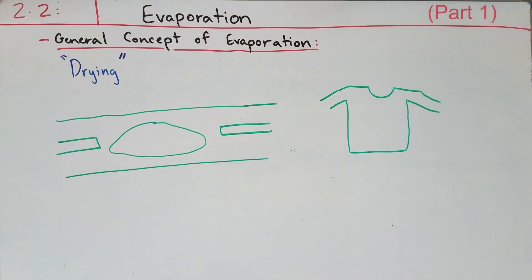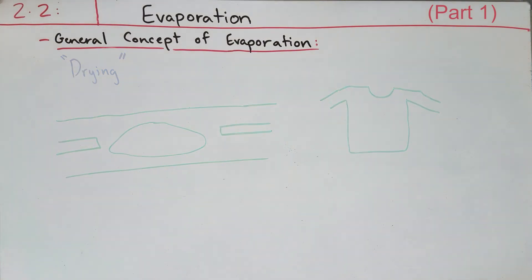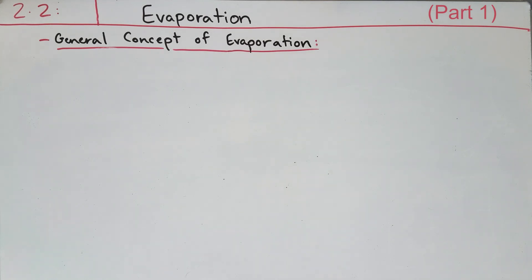Another general example of evaporation in terms of drying could be your sweater outside on your balcony, on which layers of water would slowly decrease as it gains heat and eventually your sweater would just dry off. So these were all basic examples of evaporation, and the term drying is a general term for evaporation which we commonly use.